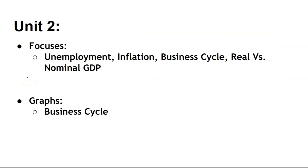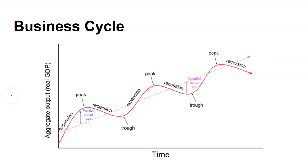Unit 2 is the economic indicators — unemployment, inflation, business cycle, and real versus nominal GDP — so much more on the mathematical side. For instance, the real versus nominal GDP equation. Graphically, really just the business cycle. This has four parts: the expansion, the peak, the recession, and the trough. We get names like positive output — when you look at the ASAD and the LRAS — a positive GDP gap or an expansionary gap comes from this term.